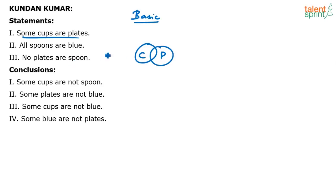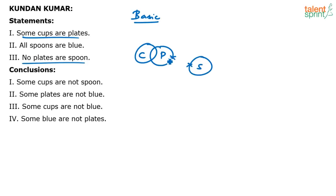Try and look at the other statement to see if there is anything common between cups and plates there. The third statement says: no plates are spoon. We draw that by putting a cross mark on plates and spoons to indicate that these two cannot overlap with each other — plates and spoons cannot overlap.